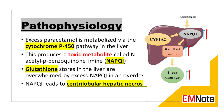Pathophysiology. In overdose situations, excess paracetamol is metabolized via the cytochrome P450 pathway in the liver. This pathway produces a toxic metabolite called N-acetyl-p-benzoquinone imine (NAPQI). Glutathione stores in the liver are overwhelmed by the excess NAPQI in an overdose, resulting in hepatocyte damage. NAPQI leads to centrilobular hepatic necrosis.